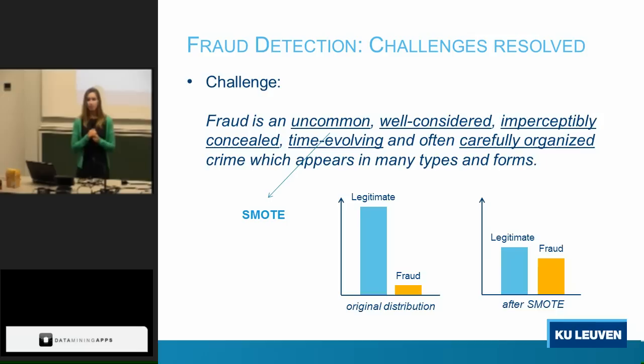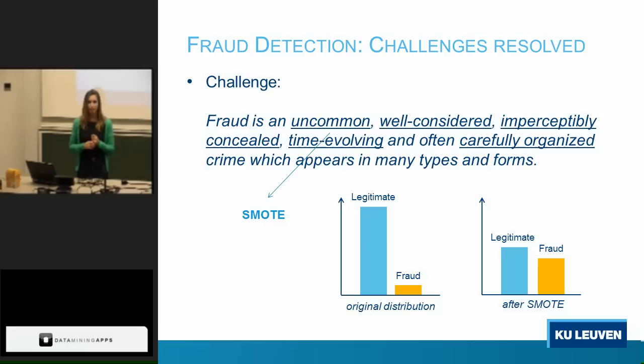What do we mean with uncommon? In most fraud detection problems, the number of fraud cases in the dataset is very small compared to the total number of cases — most of the time less than 1%. If we give this dataset to a model, the model will just classify all instances as non-fraudulent. The model has a high accuracy of more than 99% and an error rate of less than 1%, but the model is not doing what we want it to do. Therefore, we propose SMOT — we have to rebalance the dataset.